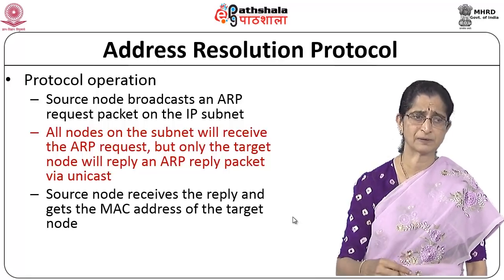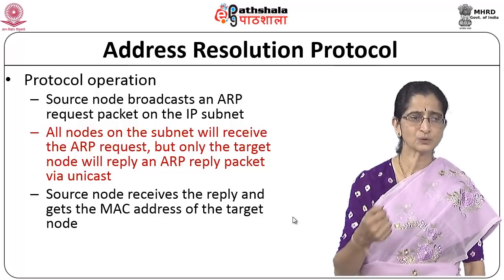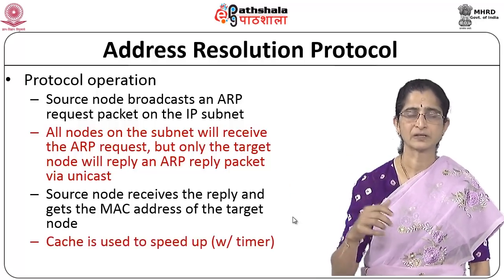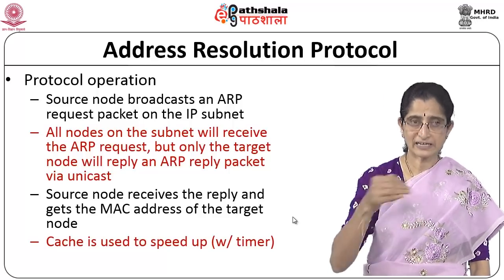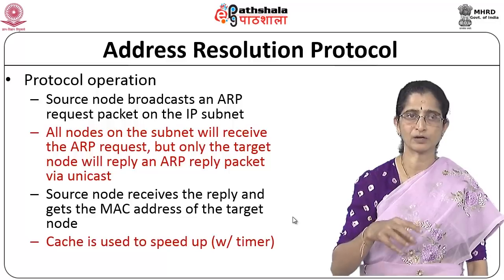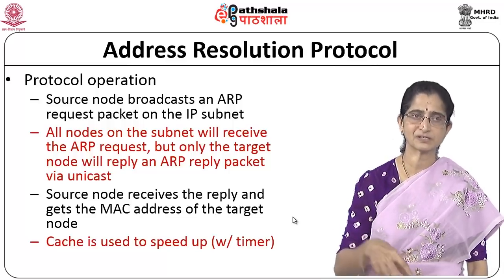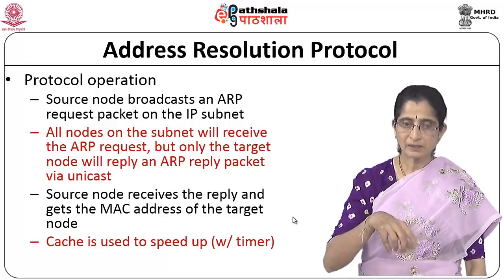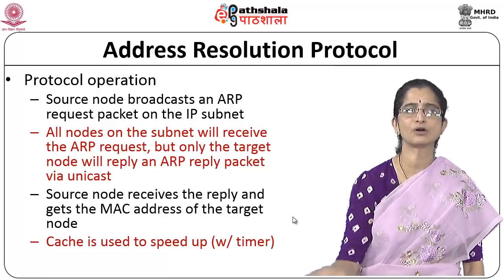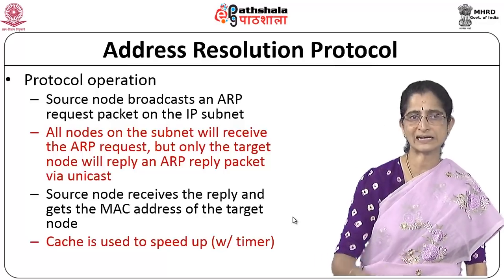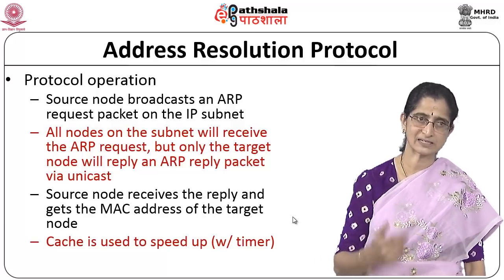The source node receives the reply, gets the MAC address of the target node, and uses that to forward the packet. It uses an ARP cache to keep this information. If another packet needs to be sent to the same address immediately after, it need not go through the ARP process again — it can look up the cache directly.